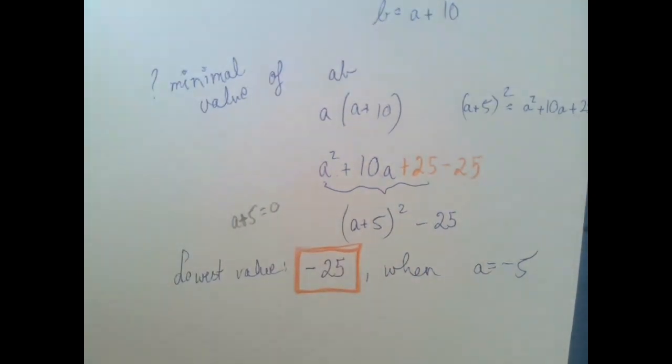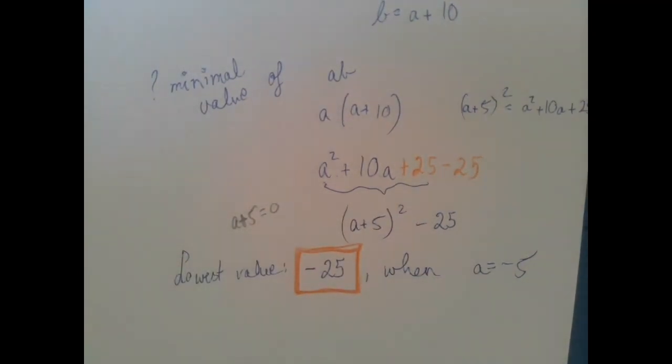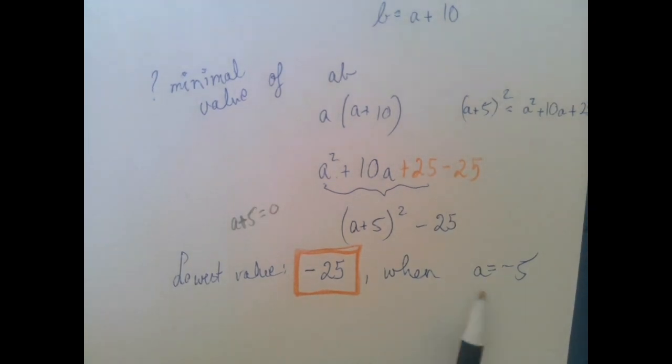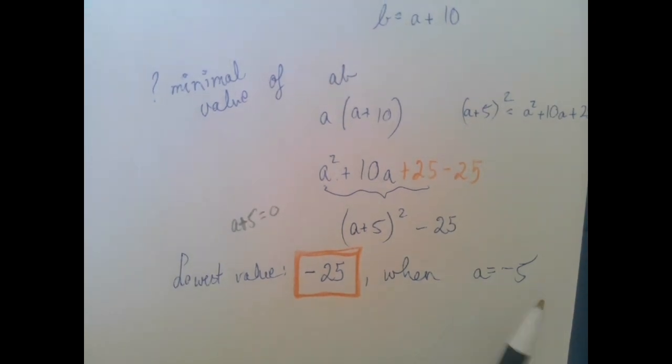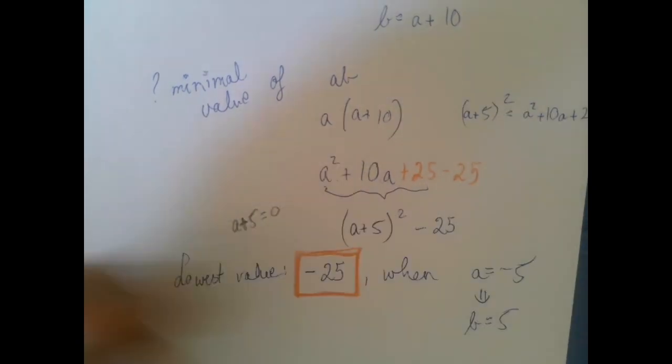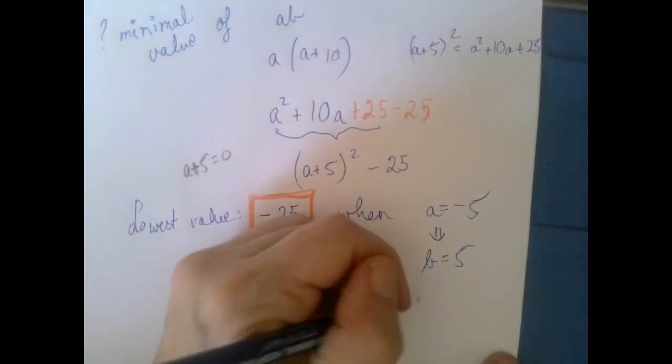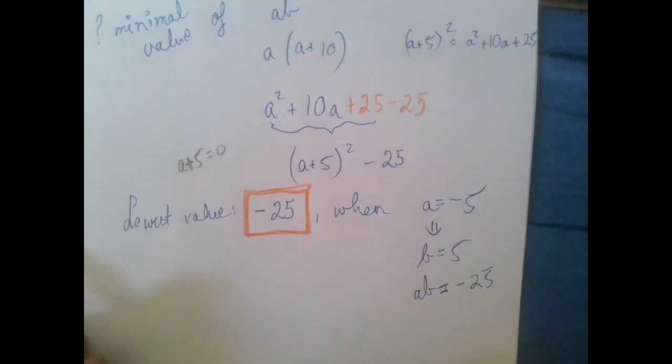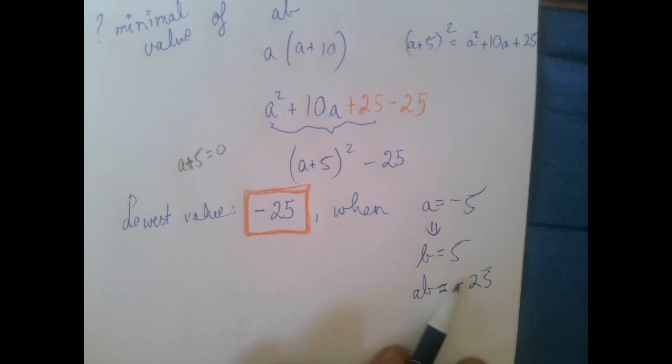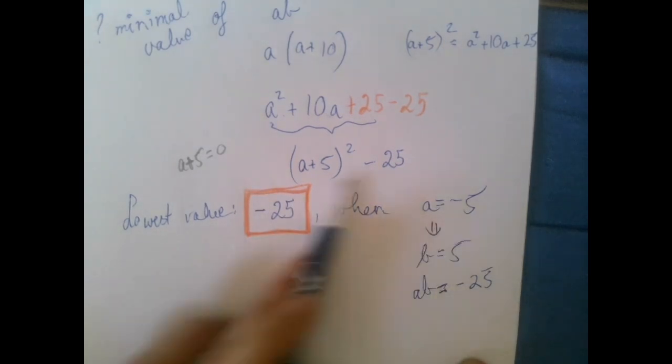But I want to keep going a little bit, because I want to show you a way to somewhat check this. So if a is negative 5, b is 10 greater than a. So if we add 10 to this, then we get b is plus 5. And so ab is negative 25. So ab equals negative 25 when a is negative 5 seems to confirm this situation.